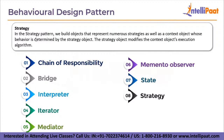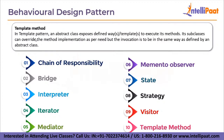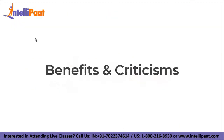In the strategy pattern, objects represent numerous strategies and a context object's behavior is determined by the strategy object, which modifies the context object's execution algorithm. The visitor pattern is used to modify the running algorithm of an element class; the execution algorithm of the element might change as the visitor changes. In the template method pattern, an abstract class exposes defined methods or templates to execute its methods; its subclasses can override the method implementation as needed, but the invocation is in the same way as defined by the abstract class.